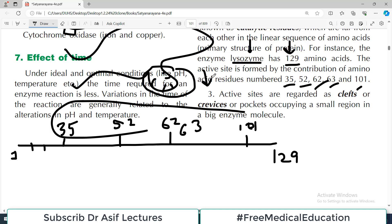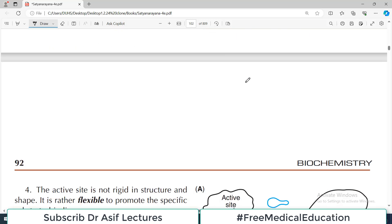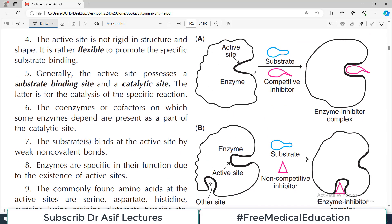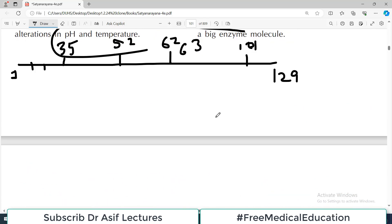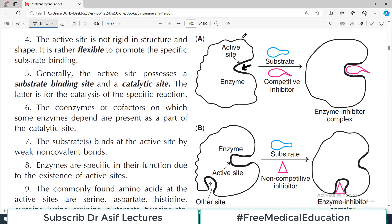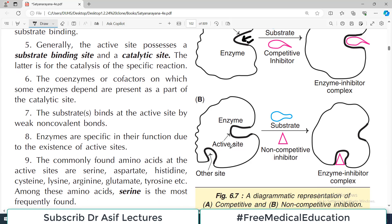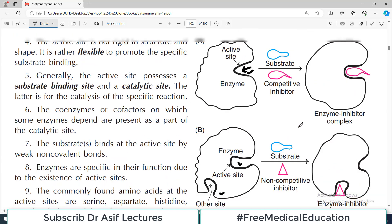The third characteristic is that active sites are regarded as clefts, crevices, or pockets which occupy small regions of the big molecule. If you look at the diagram here, this is the whole big enzyme protein molecule, and within this enzyme there is usually a cleft - the active sites are cleft-like structures. One enzyme can have more than one active site.